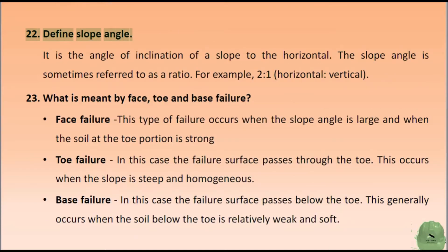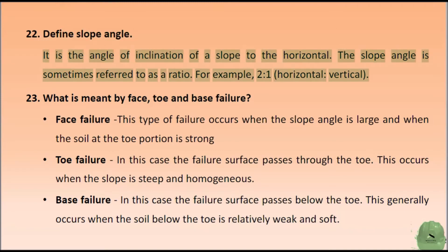Define slope angle. It is the angle of inclination of a slope to the horizontal. The slope angle is sometimes referred to as a ratio — for example, 2:1 horizontal to vertical.